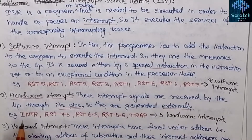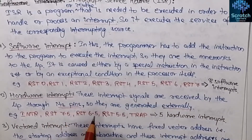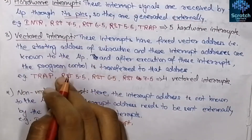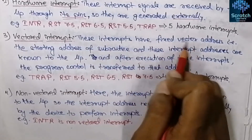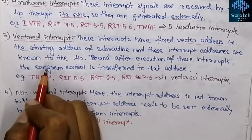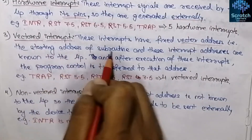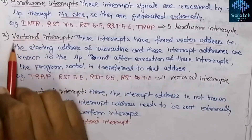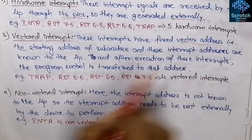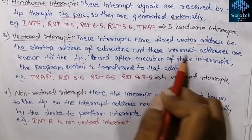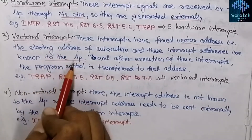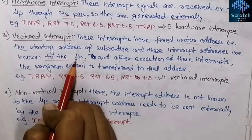There are five hardware interrupts in the 8085: INTR, RST 7.5, RST 6.5, RST 5.5, and TRAP. Now, what is a vectored interrupt? These interrupts have a fixed vector address. The main term here is 'vector address' — vector address means the starting address of a subroutine. These interrupt addresses are known to the microprocessor. In a vectored interrupt, the processor automatically branches to the specific address in response to an interrupt.